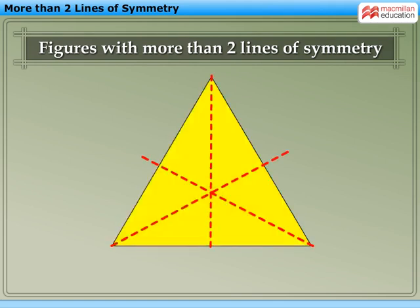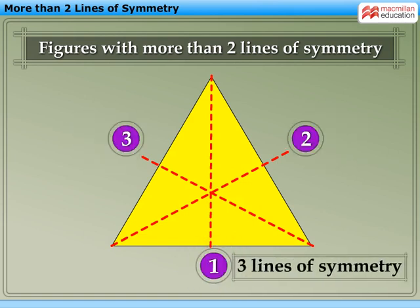Observe that in all three cases, we get two identical parts. Hence, we can say that for this symmetrical figure, there are three lines of symmetry.